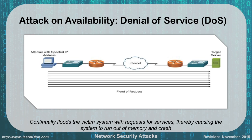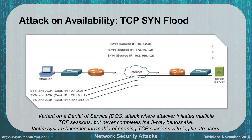In a denial-of-service example, an attacker with a spoofed IP address floods a target server with requests. When the server tries to respond, it sends replies to the spoofed IP and gets nothing back. This keeps flooding the victim system with service requests until it runs out of memory and crashes. A TCP SYN flood sends SYN requests that the server acknowledges, but the attacker never completes the handshake, using up all resources until the server crashes.